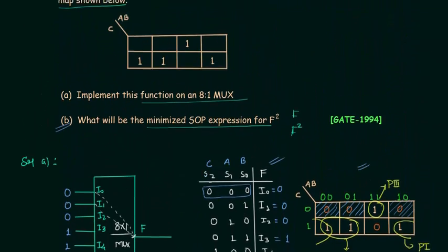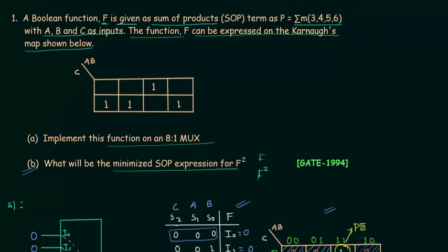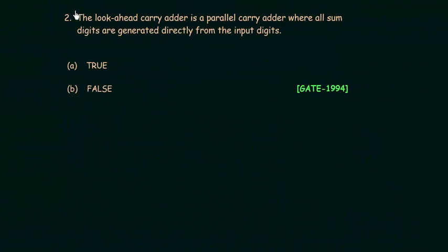Now we'll move to the second problem, also from the same exam. The lookahead carry adder is a parallel carry adder where all sum digits are generated directly from the input digits. This is a true or false problem and is homework for you. Using concepts from previous lectures on lookahead and parallel carry adders, you can choose the correct answer. Post your answer in the comment section.